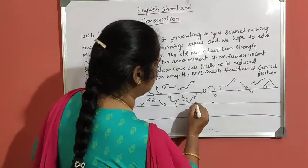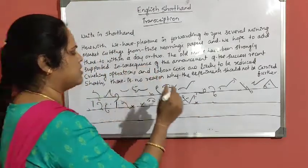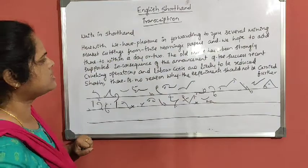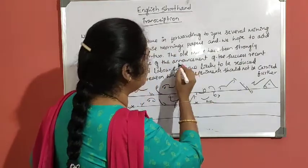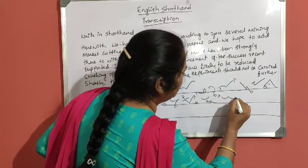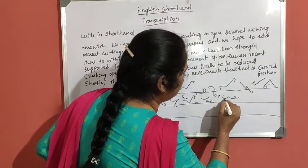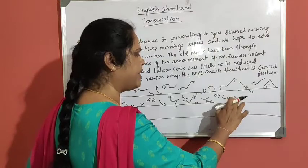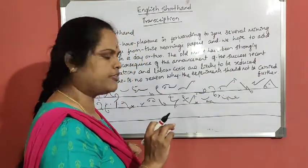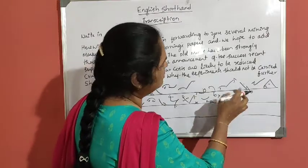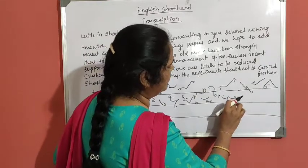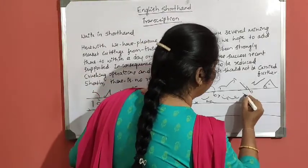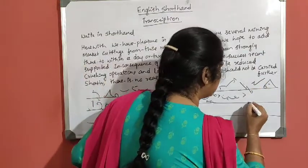Full stop. Then 'in consequence.' In consequence is disjoint. Of the announcement: N, N — circle is N — is hold. Announcement: here, in the prefixes I explained you, wherever we cannot write 'ment,' M is hold for T and N. Then we can write the hold N for 'ment' — announcement.